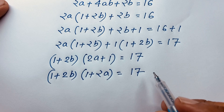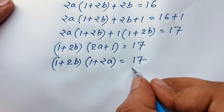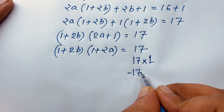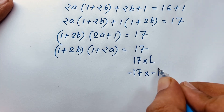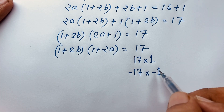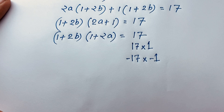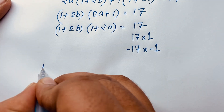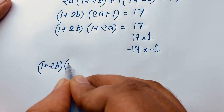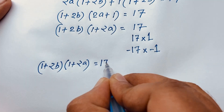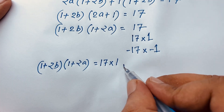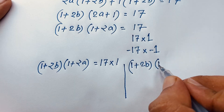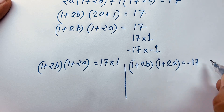Now here (1 plus 2B) times (1 plus 2A) is equal to 17. We find out the factors of 17: it will be 17 times 1, and also minus 17 times minus 1. So we have two cases: the first case is 17 times 1, and the second case is minus 17 times minus 1.